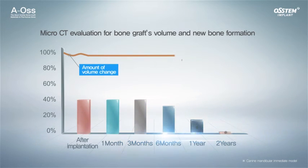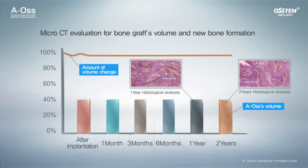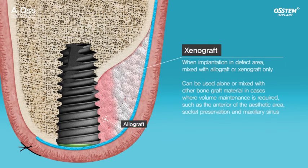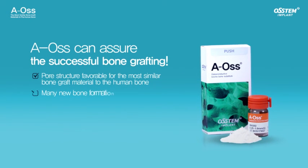Stable settlement with no absorption of the bone graft of the implant, and maintenance of volume while being filled with mature and hard lamellar bone around it, can be observed. As a result, Aeos is advantageous for cases requiring volume maintenance, even when used alone or in combination with other bone graft materials, according to indications. Aeos can assure successful bone grafts.